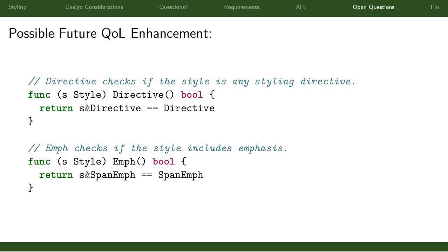It makes it really easy to have a kind of big state machine to convert to some other format. But like I said, it's not the most readable thing in the world. Because style is a separate type and not a literal uint, we could also add methods later to simplify some of this. I haven't decided about this - I would love feedback. They do kind of clutter up the documentation and you have a lot of methods to do something relatively simple, but it makes the code using this much easier to read if you can just say something like token.style.isEmphasis.